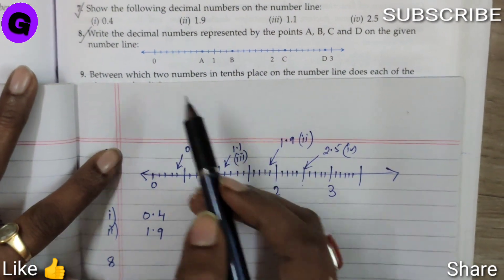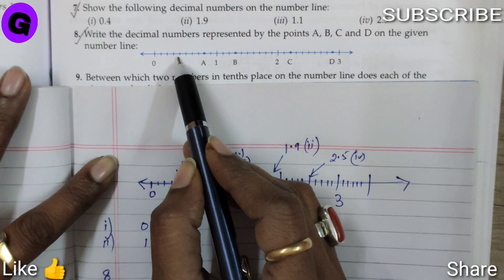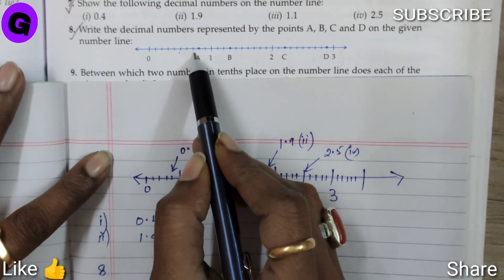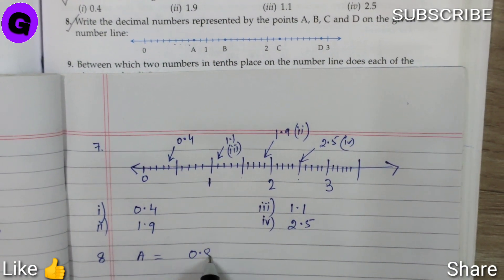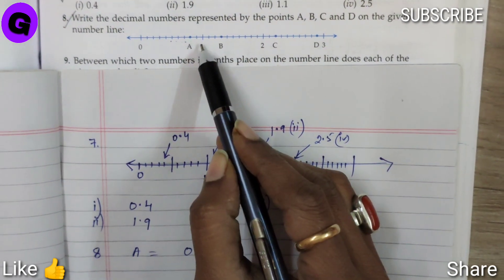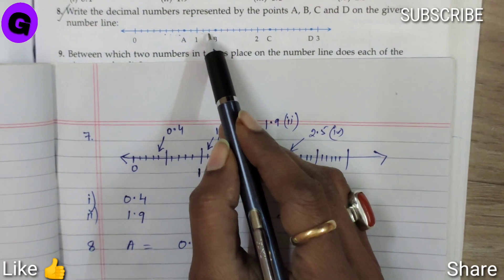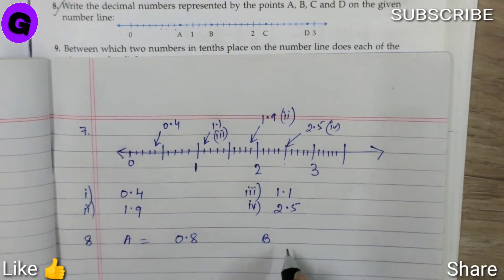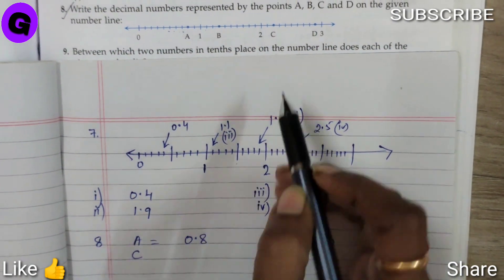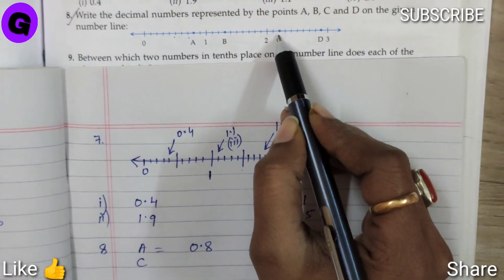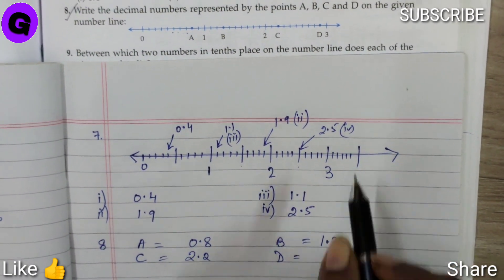So now let us count. This is 0, 0.1, 0.2, 0.3, 0.4, 0.5, 0.6, 0.7, 0.8, so A is 0.8. Now B, this is 1, 1.1, 1.2, 1.3. B is 1.3. C, this is 2, 2.1, 2.2. C is 2.2.